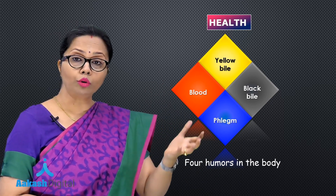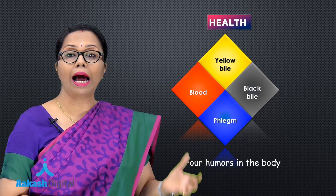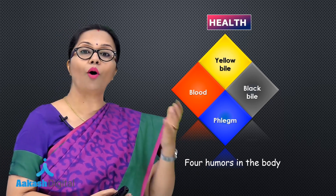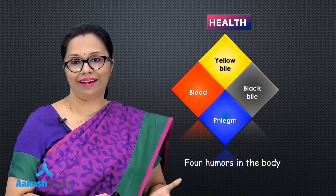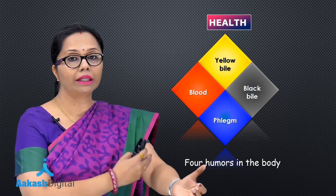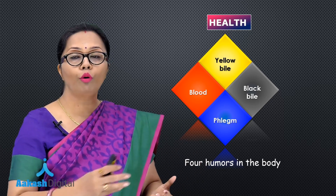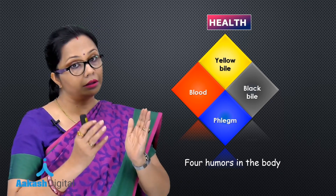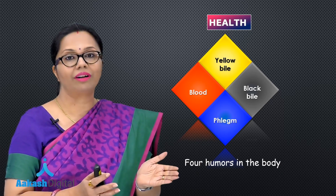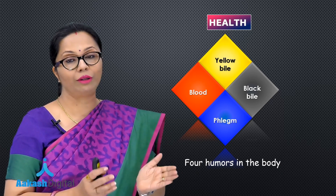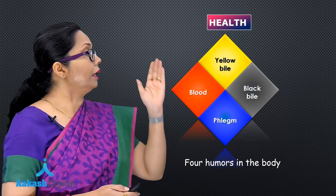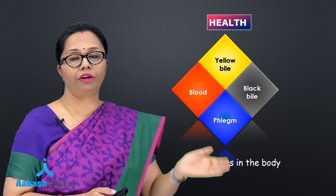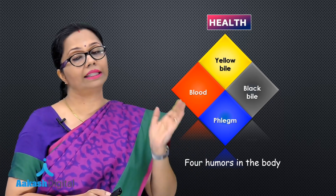They used to think that if black bile was in greater amount, that would bring on fever. The earlier system of medication was bloodletting — they would cut a particular blood vessel and allow the blood to flow out so that the bad humor would leave and health would be restored. However, that ended with the life of some patients. Later, when the entire circulatory system was discovered by William Harvey, this humoral theory was discarded.